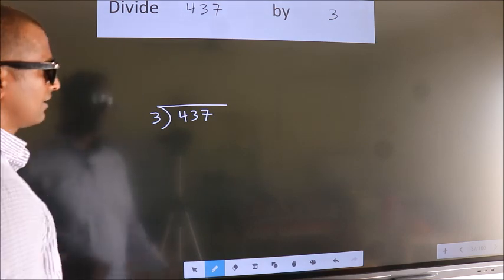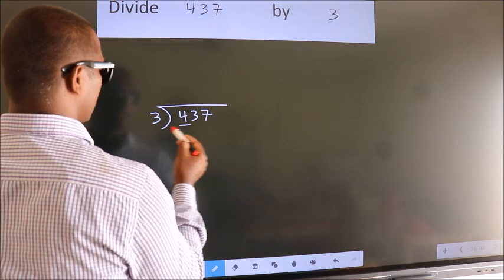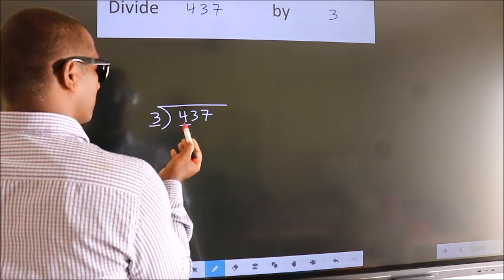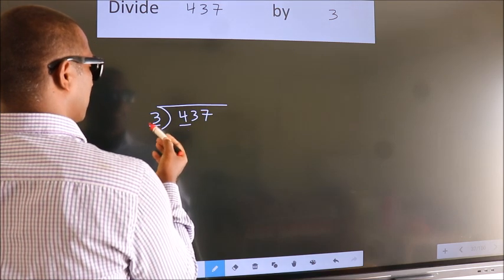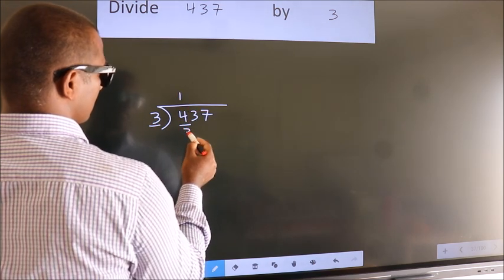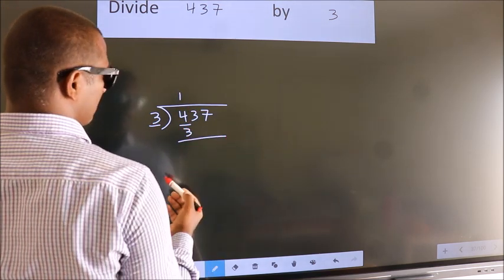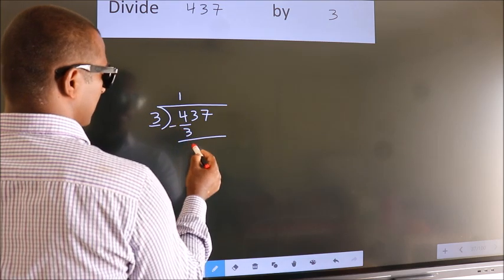Next. Here we have 4, here 3. A number close to 4 in 3 table is 3 1s 3. Now we should subtract. We get 1.